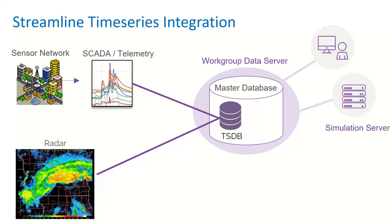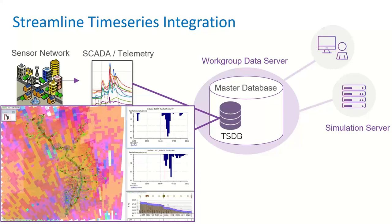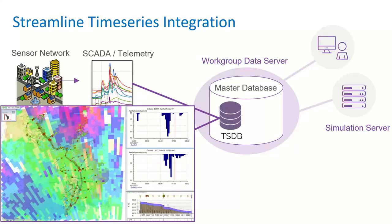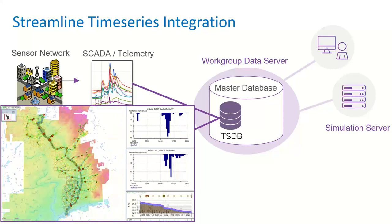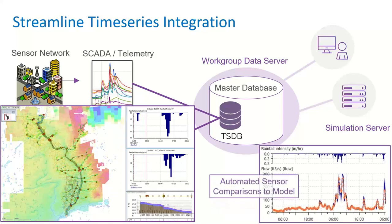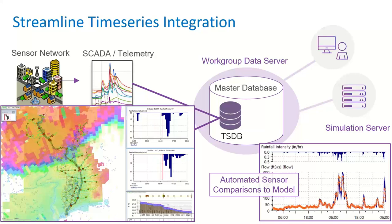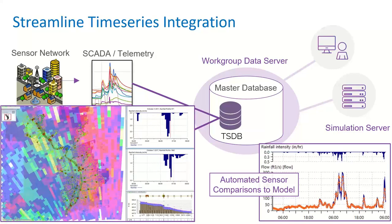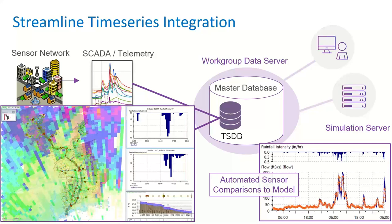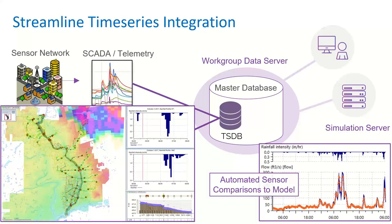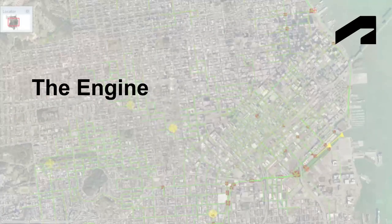This allows for a couple of things. First, you can run observed or forecasted rainfall onto the catchment you're analyzing — here we can see an example of a storm moving over an ICM catchment. Secondly, there are automated sensor comparisons that compare your observed or forecasted precipitation events to your model results, giving you quick insight into how well your model is calibrated to ensure its accuracy.